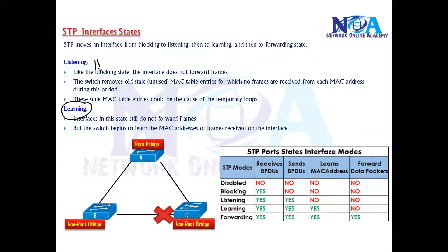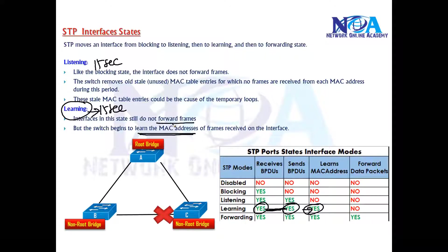After 15 seconds of listening, the port moves to the learning state. In learning state it still sends and receives BPDUs, same as in listening. The difference is it will now start learning MAC addresses and updating the MAC table. However, it still will not forward traffic — traffic is only forwarded when the port reaches the forwarding state. So the sequence is: listening, then learning, then forwarding.